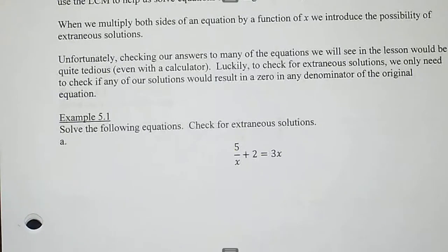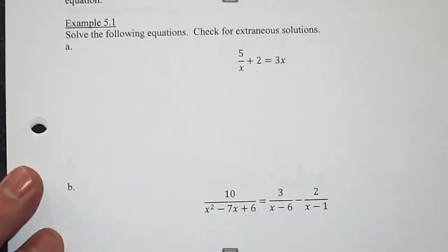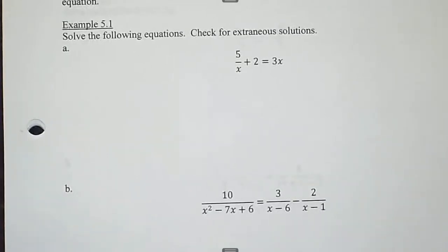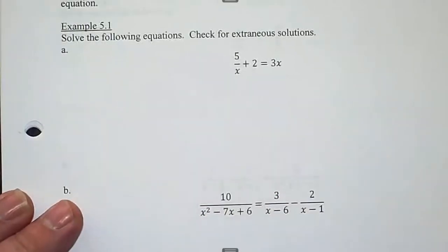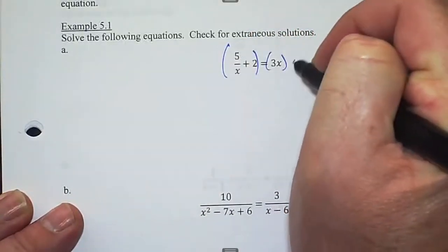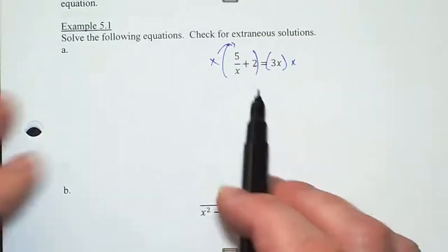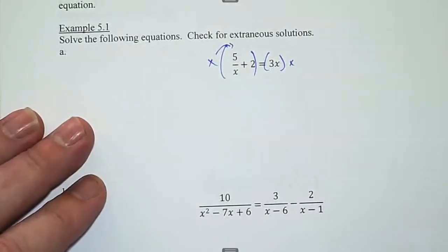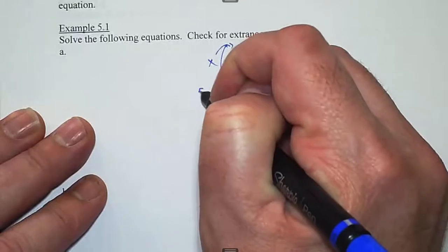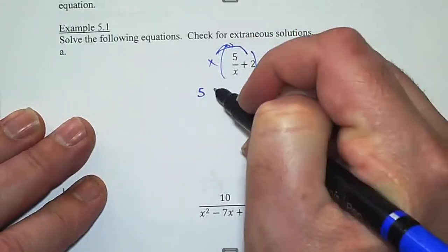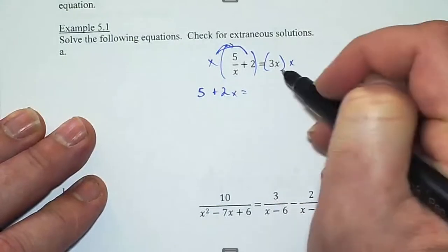Here are the steps: first you find the least common multiple of your denominators, then you multiply both sides by it. We've been doing this all year, just not with letters. There's only one denominator here and it's an x, so we're going to multiply both sides by x. Distributing: x times 5/x — always divide first — x divided by x is 1, and 1 times 5 is 5.